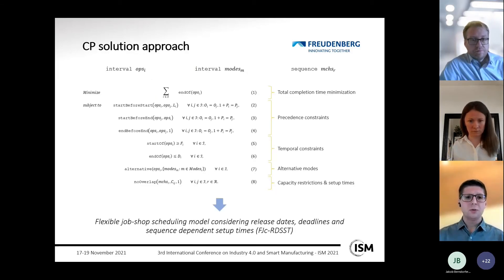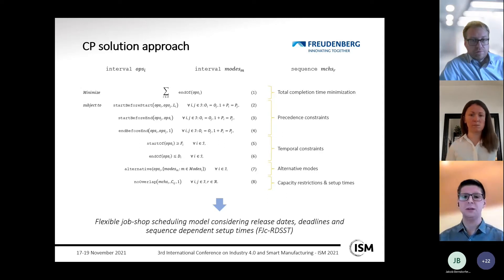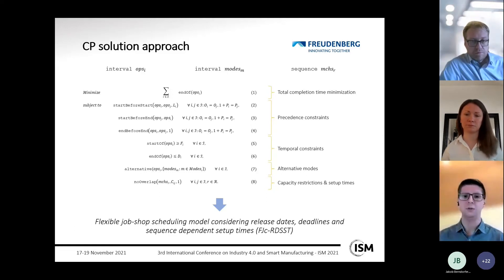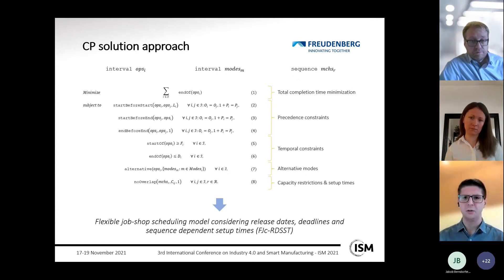The constraint programming solution approach uses three decision variables: two of them — operations i and modes m — being interval variables, and one — machines r — being a sequence variable. The sequence variable machines r ensures that interval variable modes m is scheduled in order on all resources r, meaning all orders represented by modes m are specified in a sequential order on each resource. The objective function is total completion time minimization.